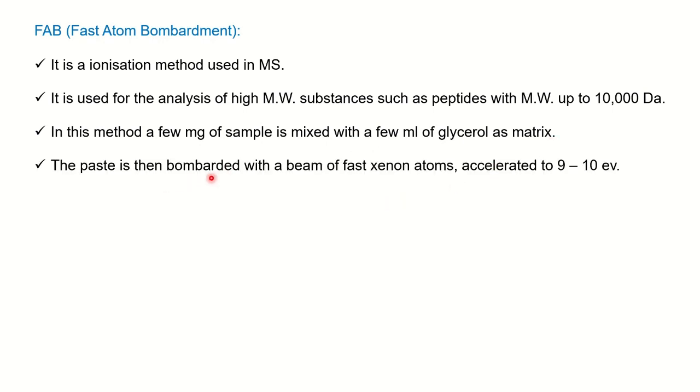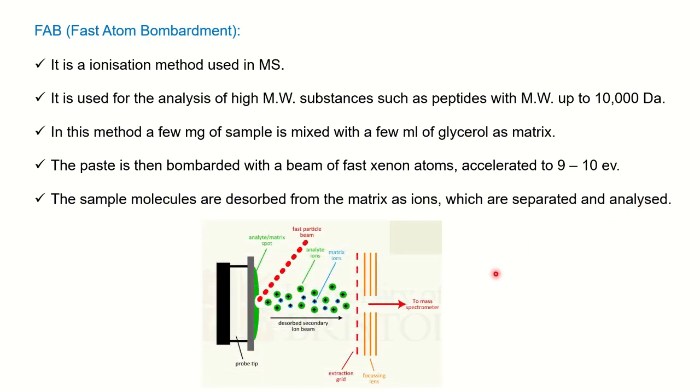Then the paste is bombarded with a fast beam of xenon atoms accelerated to 9 to 10 electron volts. Either xenon or argon atoms are used to bombard the sample. The sample molecules dissolved in the matrix will be ionized with this xenon atom which has high translational energy. It will transfer this energy to the analyte and it will be ionized and then finally separated and travel towards the mass analyzer and analyzed.